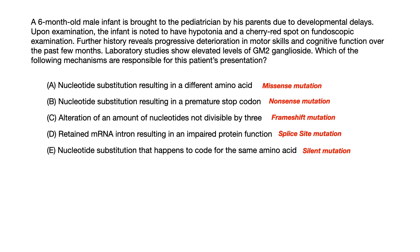Choice A — nucleotide substitution resulting in a different amino acid — is a missense mutation. Choice B — nucleotide substitution resulting in a premature stop codon — is a nonsense mutation. Choice C — alteration of nucleotides not divisible by three — is a frameshift mutation and is the correct answer. Choice D — retained mRNA intron resulting in impaired protein function — is a splice site mutation. Choice E — nucleotide substitution that happens to code for the same amino acid — is a silent mutation.